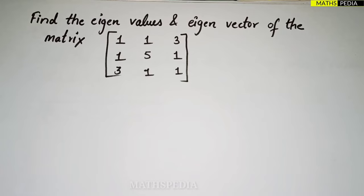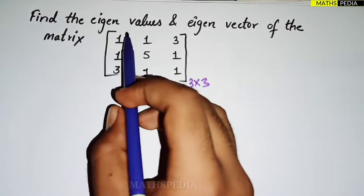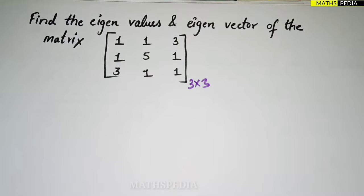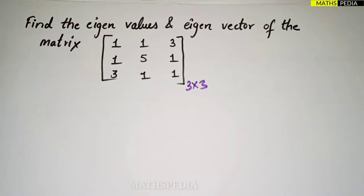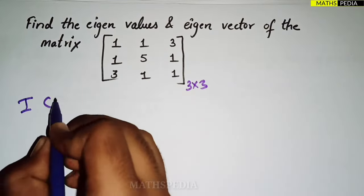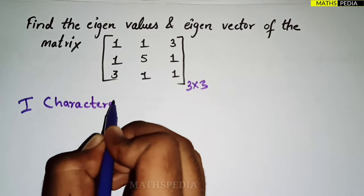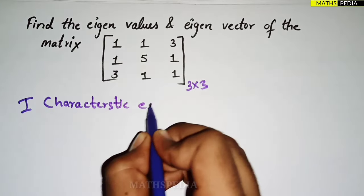In this video, we'll learn how to find the eigenvalues as well as the eigenvectors of a 3×3 matrix. The question asks us to find the eigenvalues and eigenvectors of the given matrix. The first step is always to find the characteristic equation.